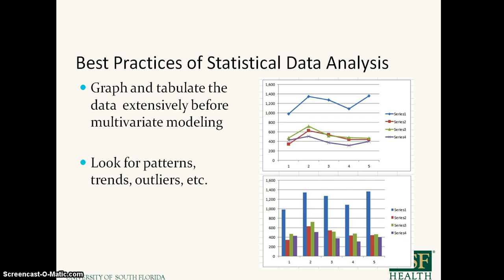After the data is clean, the first thing you want to do is graph and tabulate the data extensively before multivariate modeling. Look for patterns, trends, and outliers to see what you need to do next. You want to make a lot of graphs, visualize your data, and generate univariate statistics to learn more about your data. This is very important before you do any formal multivariate modeling — you want to know your data.